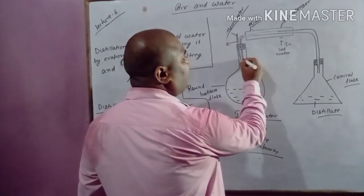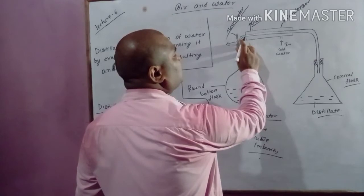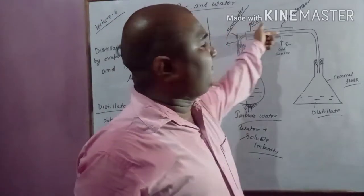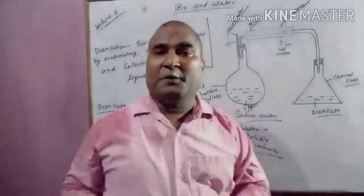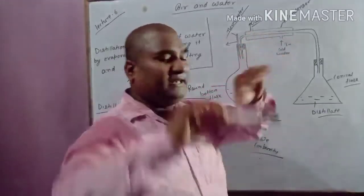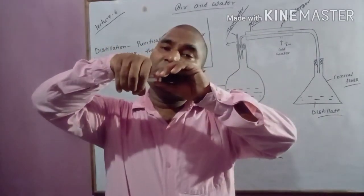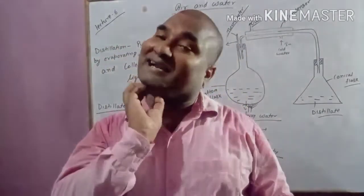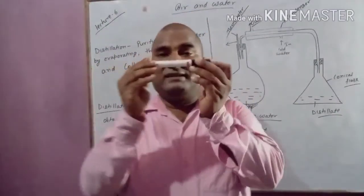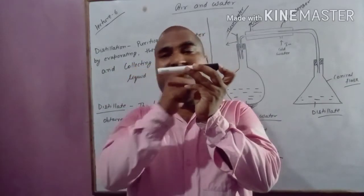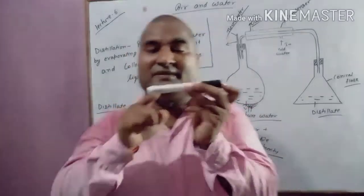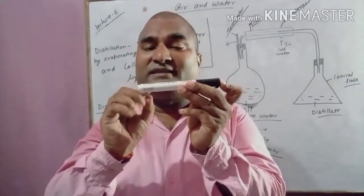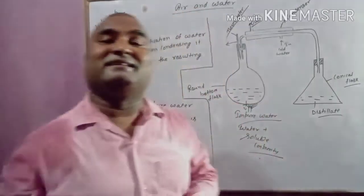When vapor rises, it goes through this tube up into the condenser. The condenser has an inner tube and an outer tube surrounding it. Cold water flows in the outer tube. So steam passes through the inner tube while cold water surrounds it from outside. Due to this cold water, the water vapor gets condensed — after condensation, the water vapor changes into liquid. This process is called condensation.